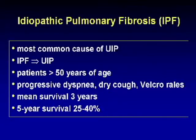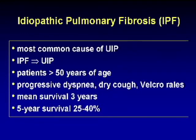The idiopathic disease associated with UIP is IPF — idiopathic pulmonary fibrosis — and it's the most common cause. If you have IPF, your histology must be UIP. Patients are generally older than 50, presenting with progressive dyspnea, dry cough, and so-called Velcro rales at the lung bases. Mean survival is only three years; five-year survival is 25 to 40 percent. Having IPF is like having lung cancer.